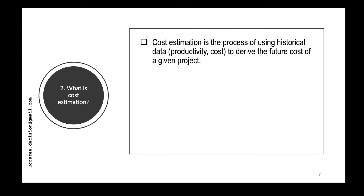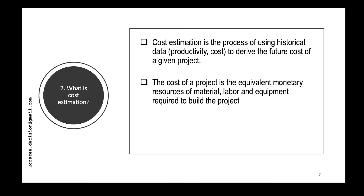To summarize: the first definition of cost estimation is the process of using historical data to derive the future cost of a given project — it's always about future cost, something not yet done, because if it's already done you already know the cost. The second definition is finding the equivalent monetary resources of material, labor, and equipment required to complete your project.